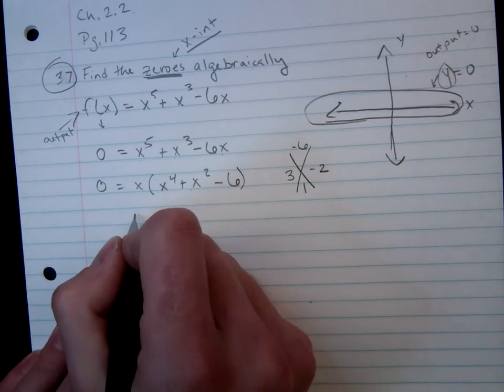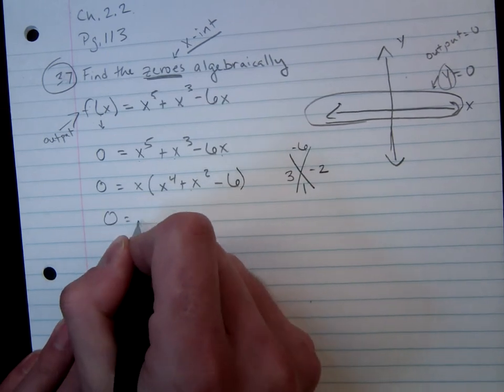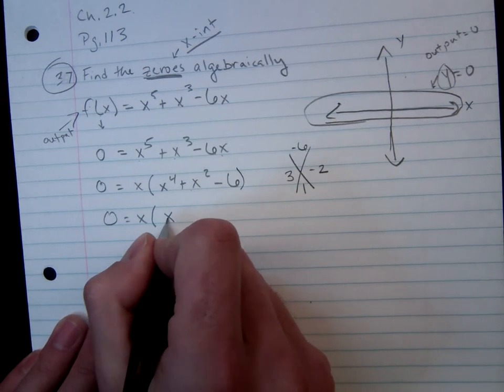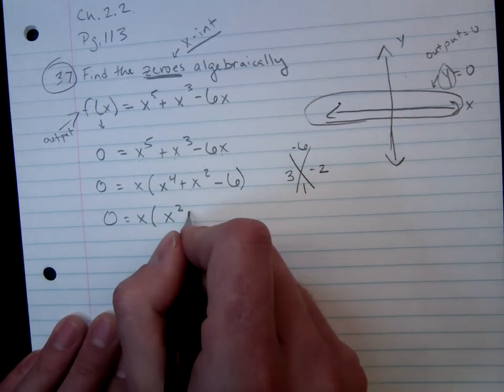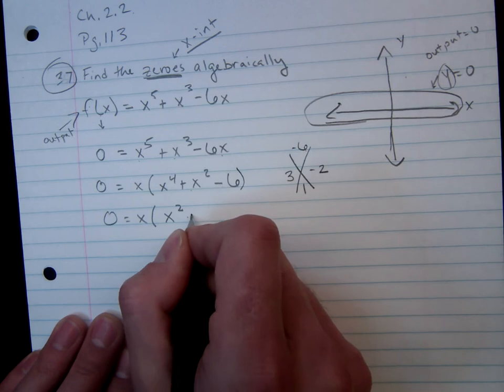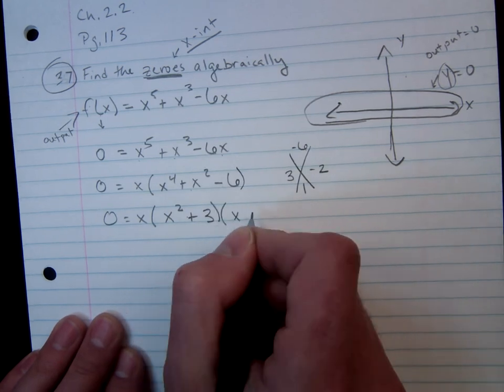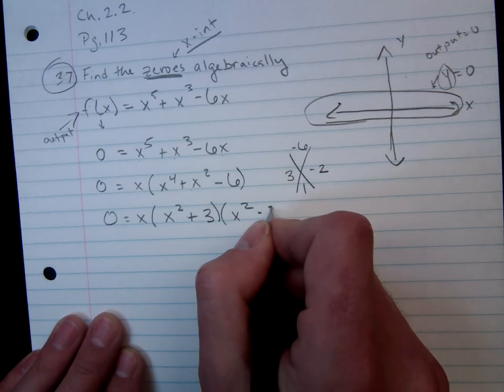So when I factor these out, I'm going to go ahead and rewrite everything else. I get x times, don't forget about the x there, x times x squared plus 3 times x squared minus 2.